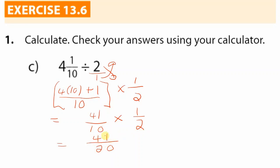41 is bigger than 20, so it is an improper fraction. Let's change it into a mixed fraction. 20 goes into 41 twice — 2 times 20 is 40 — we still need one more, so the remainder of one goes at the top and we always keep the bottom the same. The answer is 2 and one-twentieth.